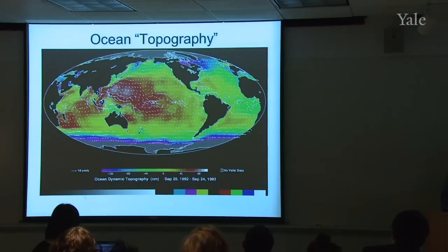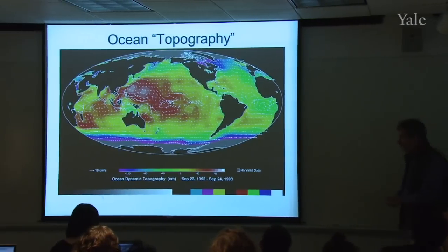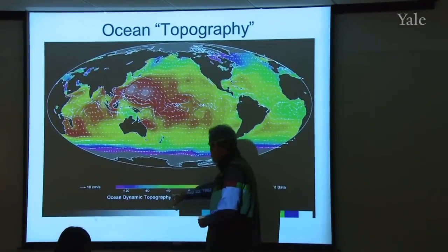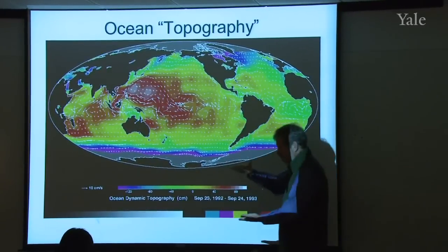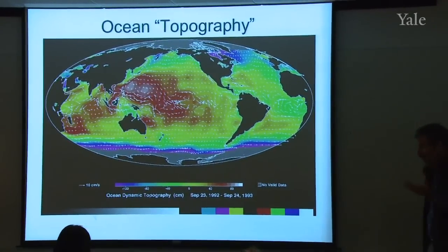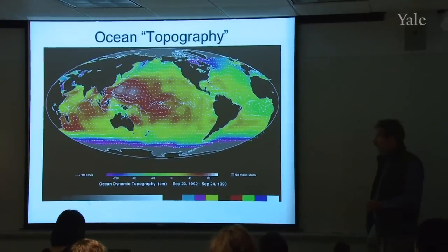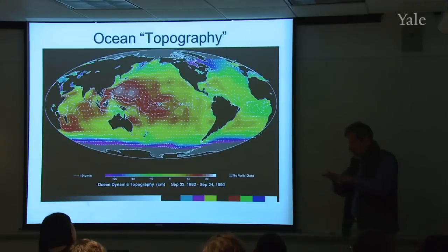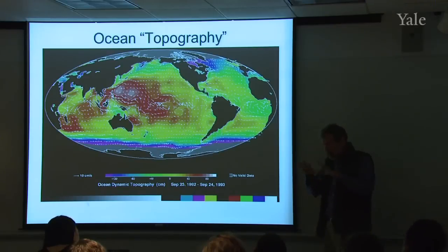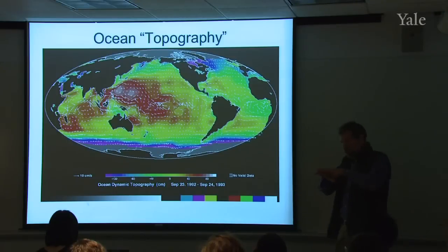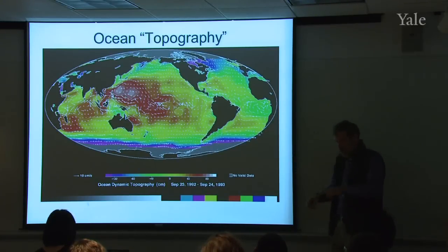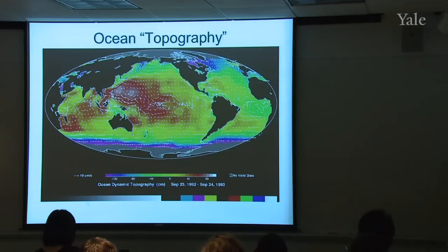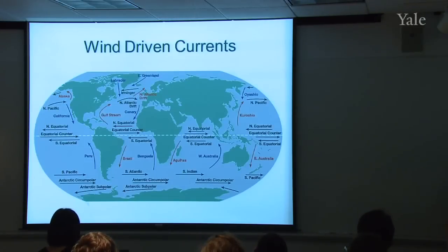Here are the winds and the ocean topography as measured from space, with units in centimeters. Typically it's a topography of only about a meter — you'd never notice it sailing through, but the water is slightly higher than the geoid of the Earth. This rises slightly above that level surface, giving rise to pressure gradients underneath. And these are the wind-driven currents.